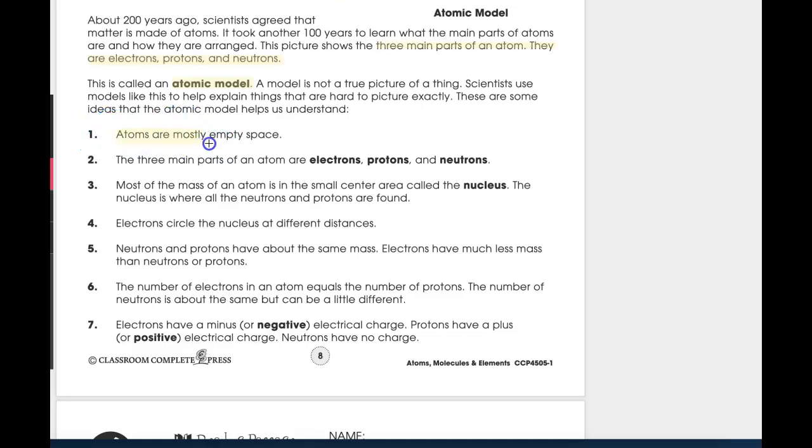Highlight this phrase atomic model. Remember guys, we use models to think about atoms because we really can't see them. So scientists create these models and we represent them very similar to what you see on your paper. Here are some things, numbers one through seven, that models help us understand. Number one, highlight the whole thing. Atoms are mostly empty space. I know there is a question on your worksheet about this. Three main parts of atoms are electrons, protons, and neutrons. We have already highlighted that in our reading. Most of the mass of an atom is in the small center called the nucleus. The nucleus is where all the neutrons and protons are found.